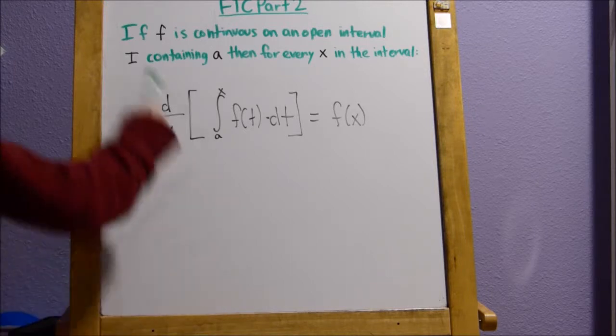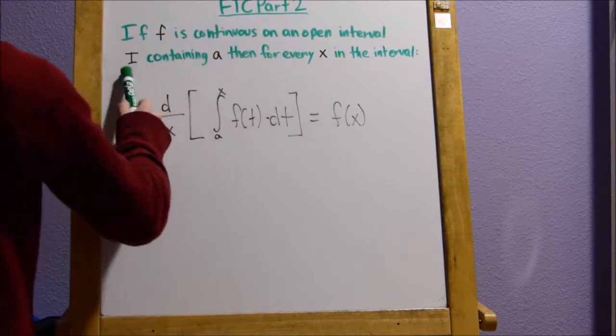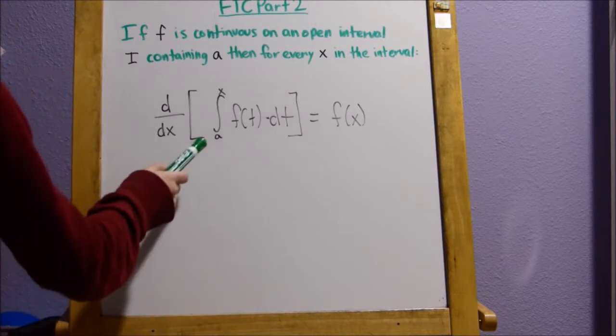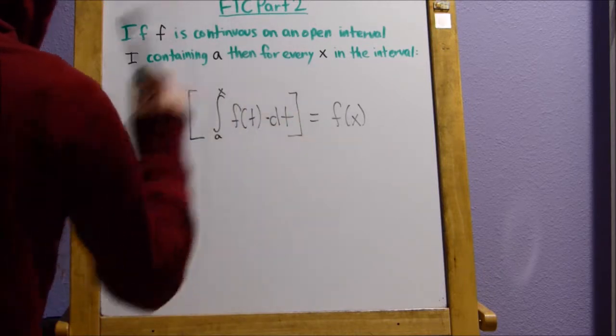So it starts off with, if f, a function, is continuous on an open interval i containing a, a number, then for every x in the interval, the derivative of the antiderivative of f of t dt equals f of x.